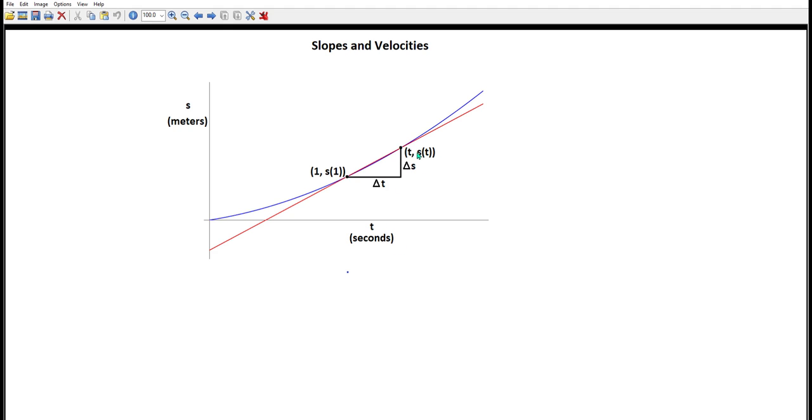Now when we do this secant line, we're going to have delta s over delta t this time as the slope of our secant. And delta s is a change in distance. Delta t is a change in time.